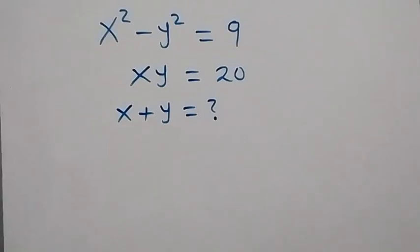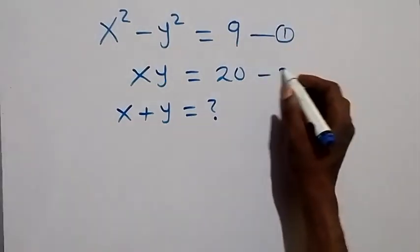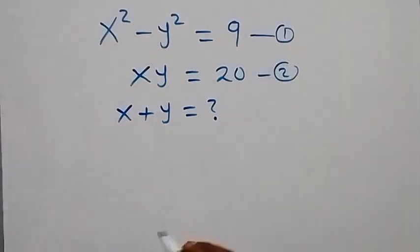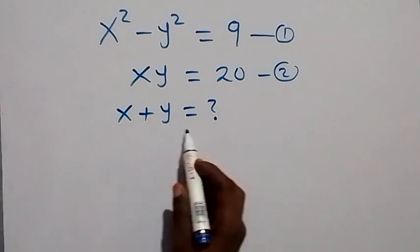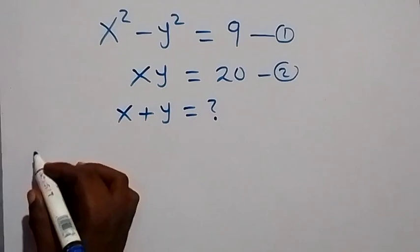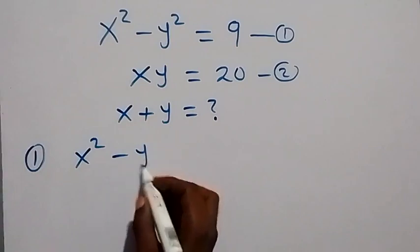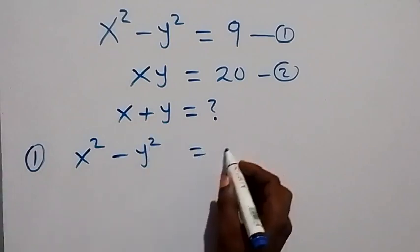Hello, you are welcome. How to solve these nice systems of equations: we have x squared minus y squared equals 9, and we have xy equals 20. Let's label this as equation 1 and this as equation 2. We are interested in finding the value of x plus y. From equation 1 we have x squared minus y squared equals 9.